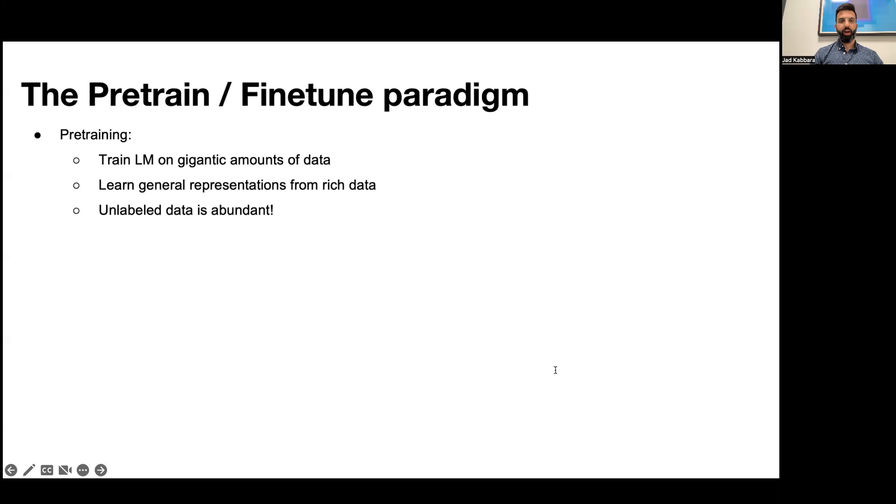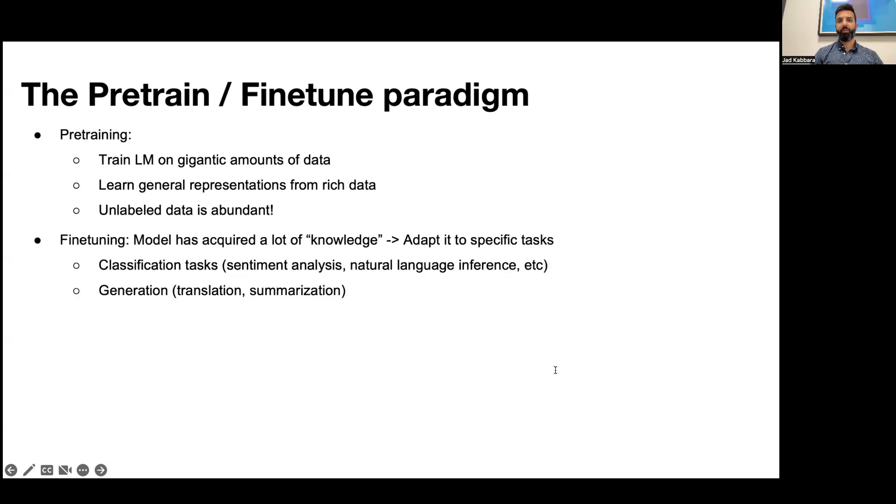One motivation behind pre-training is that the model is trained on unlabeled data which is vastly available compared to specific tasks that have limited amounts of labeled data. As a consequence, once the model has been pre-trained, we go and adapt it to a specific NLP task which would have limited labeled data.